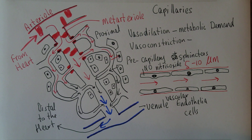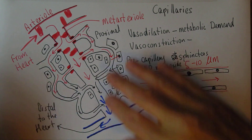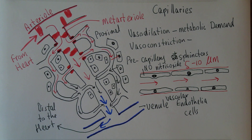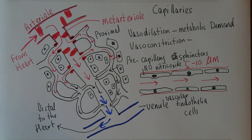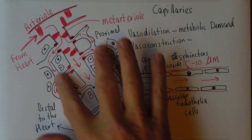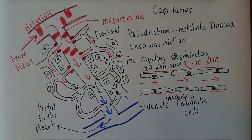Metabolically active tissues like the brain, muscles, kidneys, and liver will have lots of capillary beds and be very well perfused, so large amounts of blood can go to those tissues when there's a metabolic demand. Other tissues like adipose tissue, tendons, and ligaments have fewer capillaries — that's why tendons and ligaments take so long to heal, because healing is dependent on blood supply. There are no capillaries in the cornea or lens of the eye, which is why they're clear — no blood goes through them.